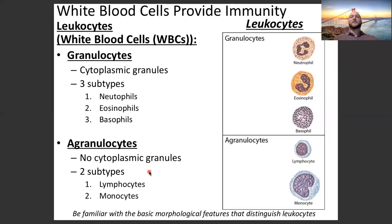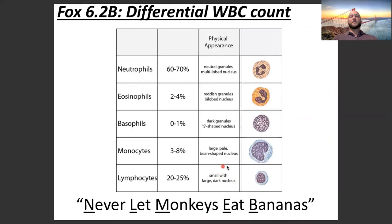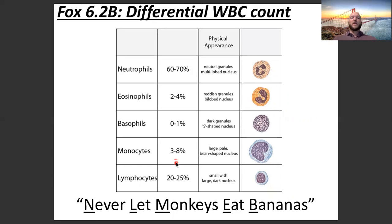I'm not going to show you a microscope photo and expect you to identify which white cell it is or give a differential count from a photo. But I do want you to know some basic descriptions. Neutrophils are the most common — 60 to 70% of the total. A differential white cell count tells you what percentage of the whole each type represents, and this is important when diagnosing patients and figuring out what's going on.